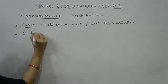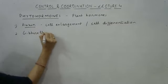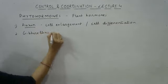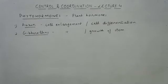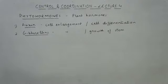The second category is gibberellins — note the spelling carefully. Gibberellins are quite similar to auxins in function; they also promote cell enlargement. In addition, they help in the growth of the stem. However, always remember that auxin is the primary hormone — gibberellins function only in the presence of auxins. If auxins are not there, gibberellins will not show their effect.